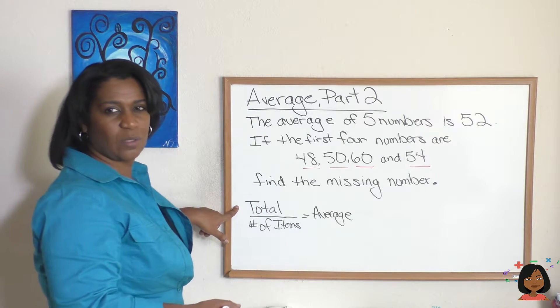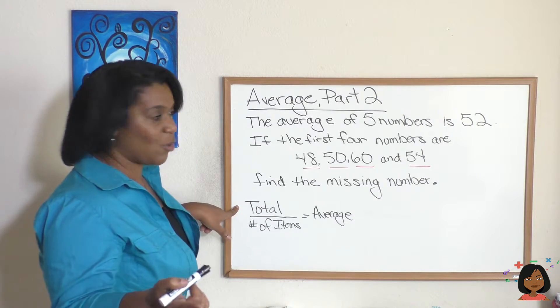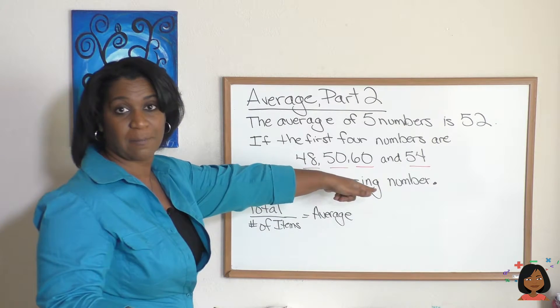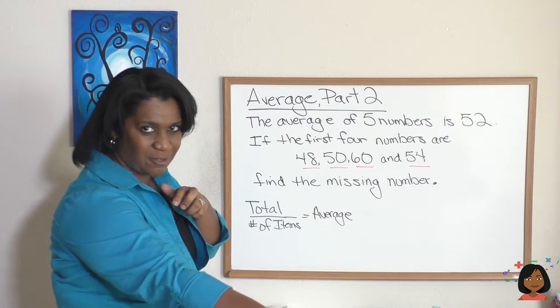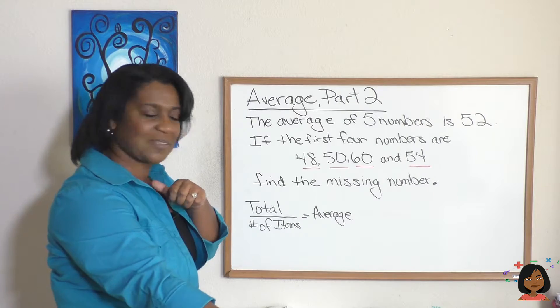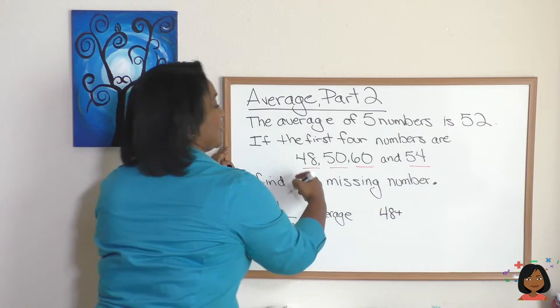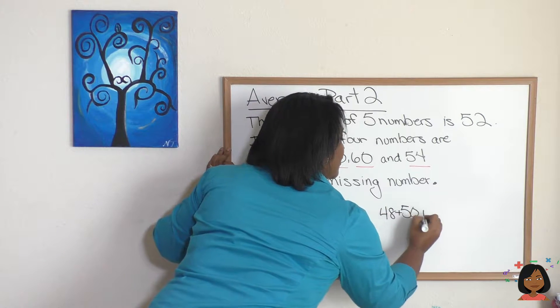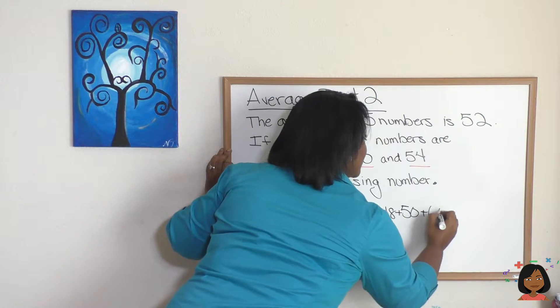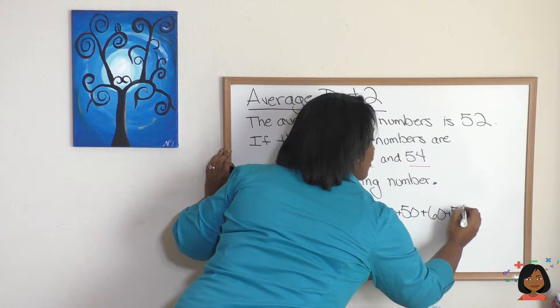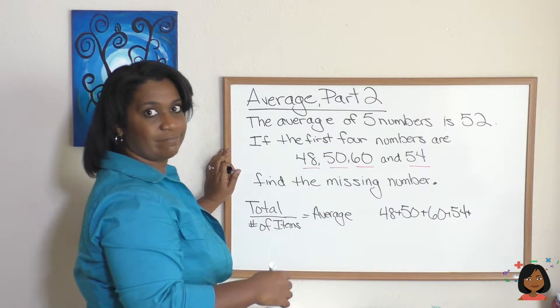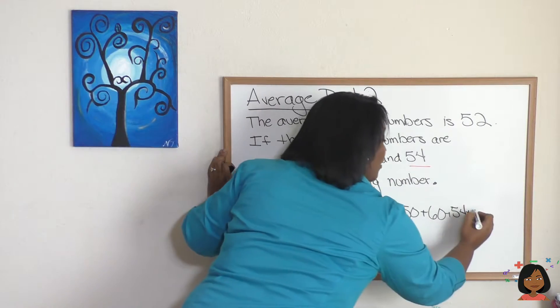Let's plug in what we have. So do we have a total? Well, we almost have a total. We have the first four numbers and whatever is left over will be our total. So let's write that. Let's write 48 plus 50 plus 60 plus 54 plus we could say x, we don't know what it is.